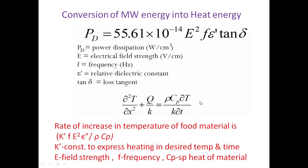The power dissipation equation and the heat transfer equation are linked: the power dissipated P_D in the food matrix generates heat, corresponding to the heat generation term q. Since P_D has units of watts per cm³ and q is the volumetric rate of heat generation (joules per second per unit volume = watts per unit volume), P_D and q are equivalent when using consistent units.